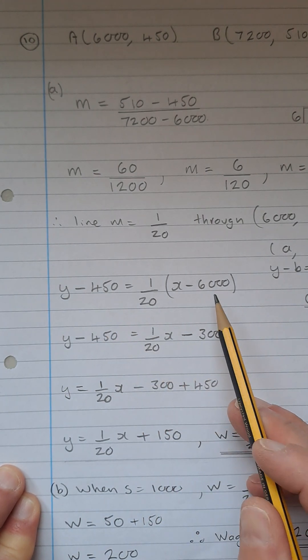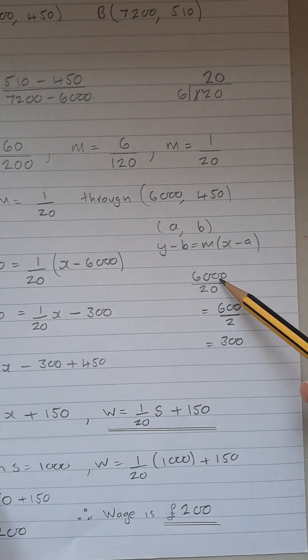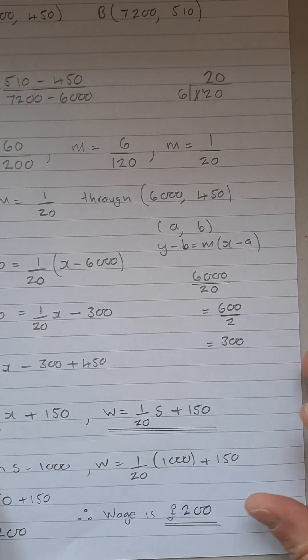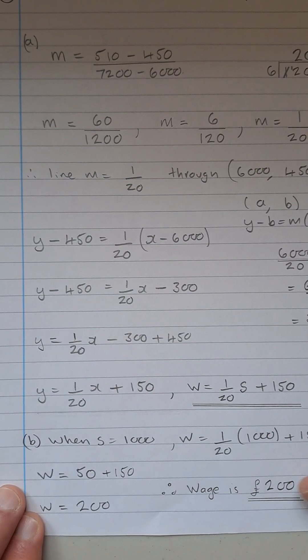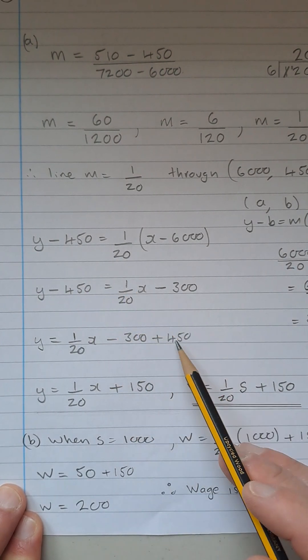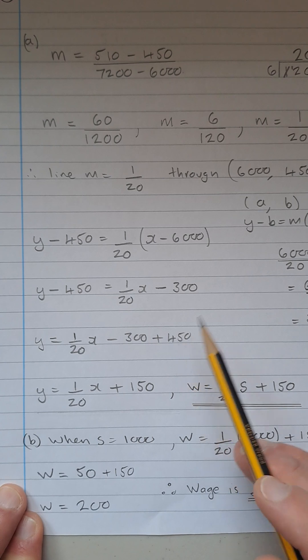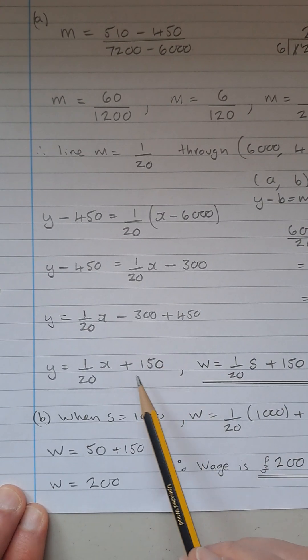Take away, and what's 6,000 divided by 20? Well, same trick as before. Cross out the zeros. We have 600 over 2, which is 300 there. So Y minus 450 is 1 over 20 times X minus 300. Move the minus 450 over to be plus 450. So Y equals 1 over 20 times X plus 150.